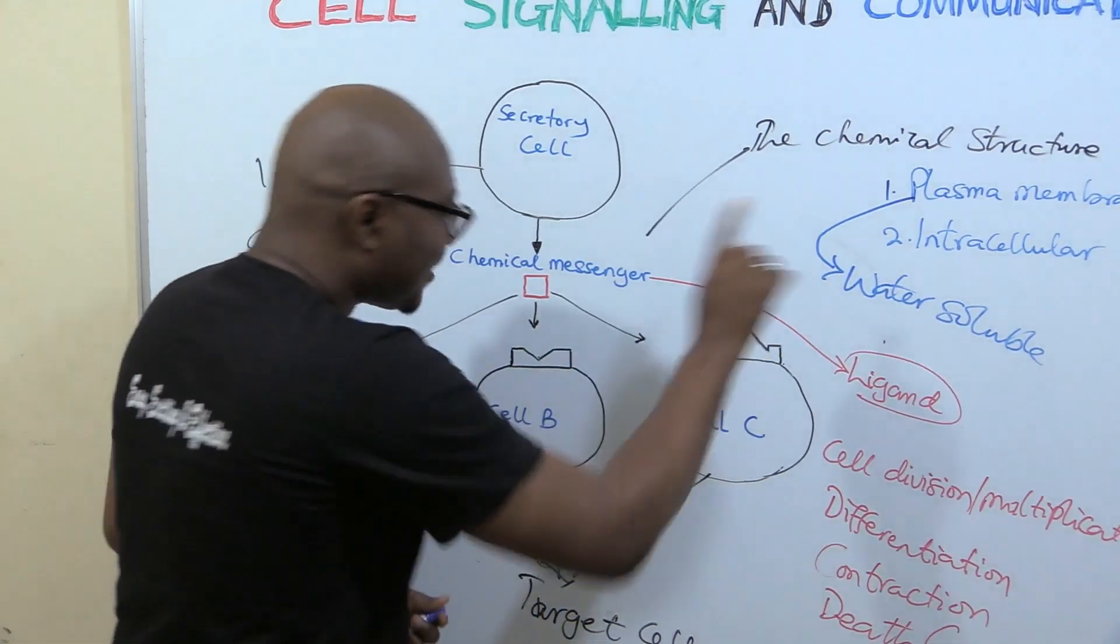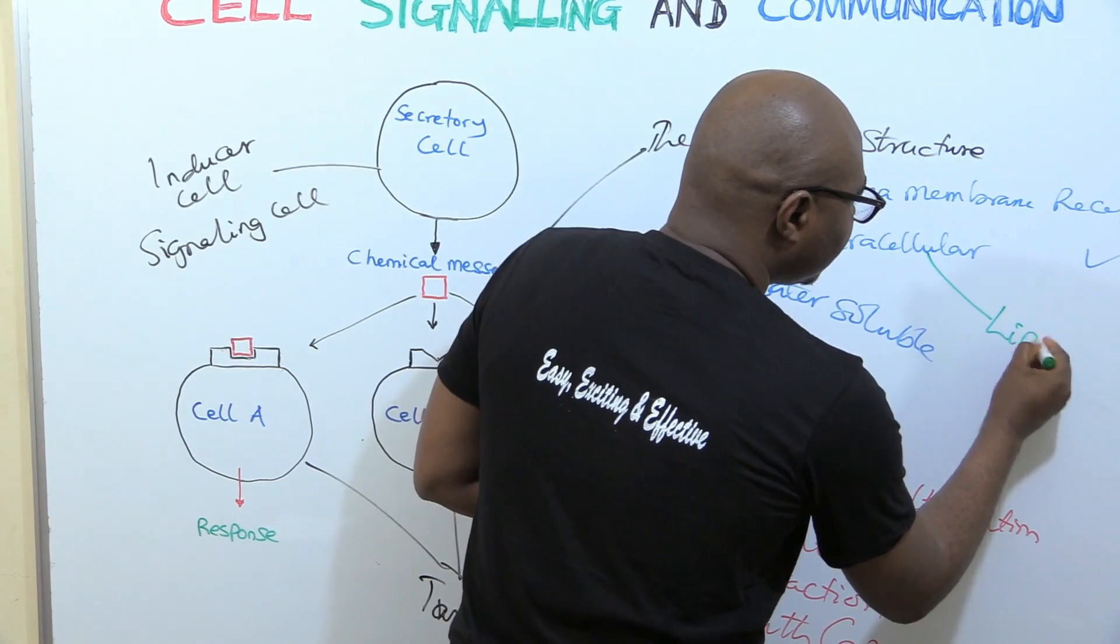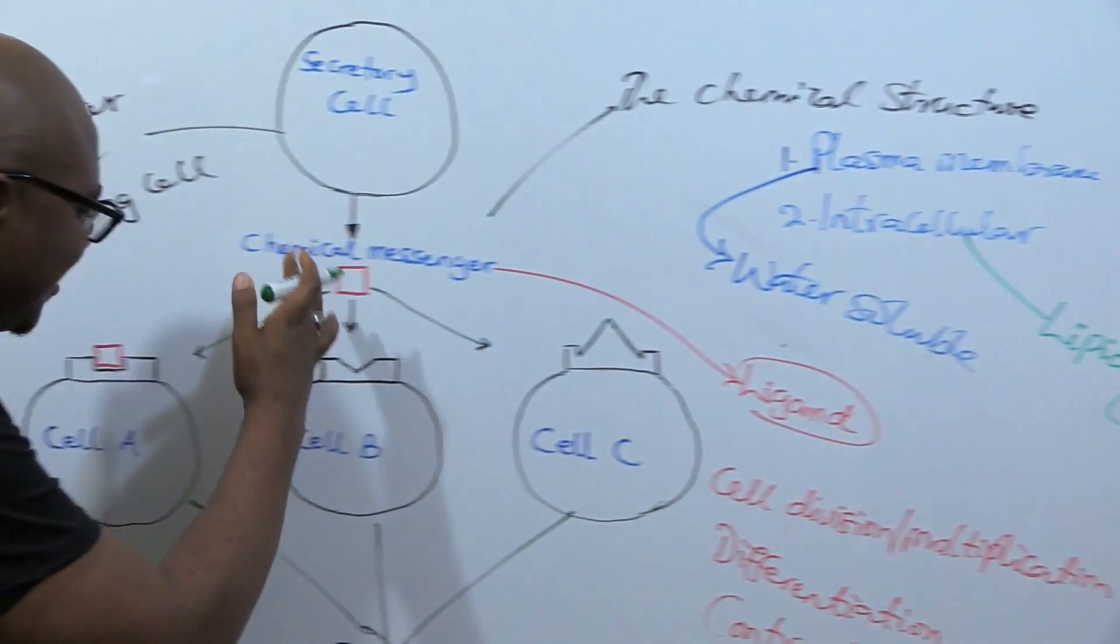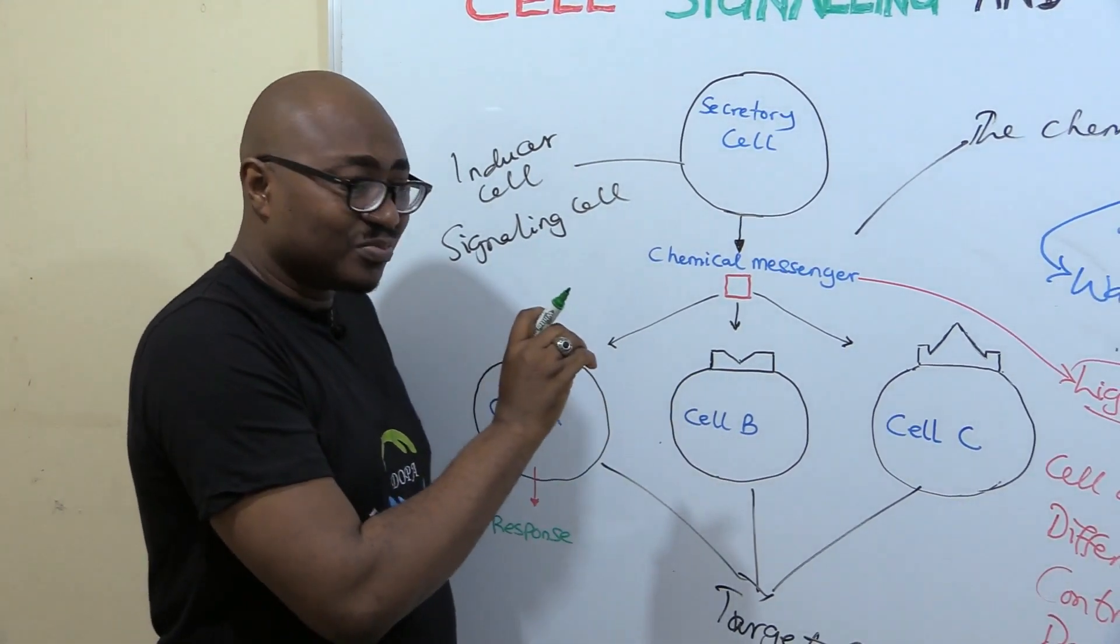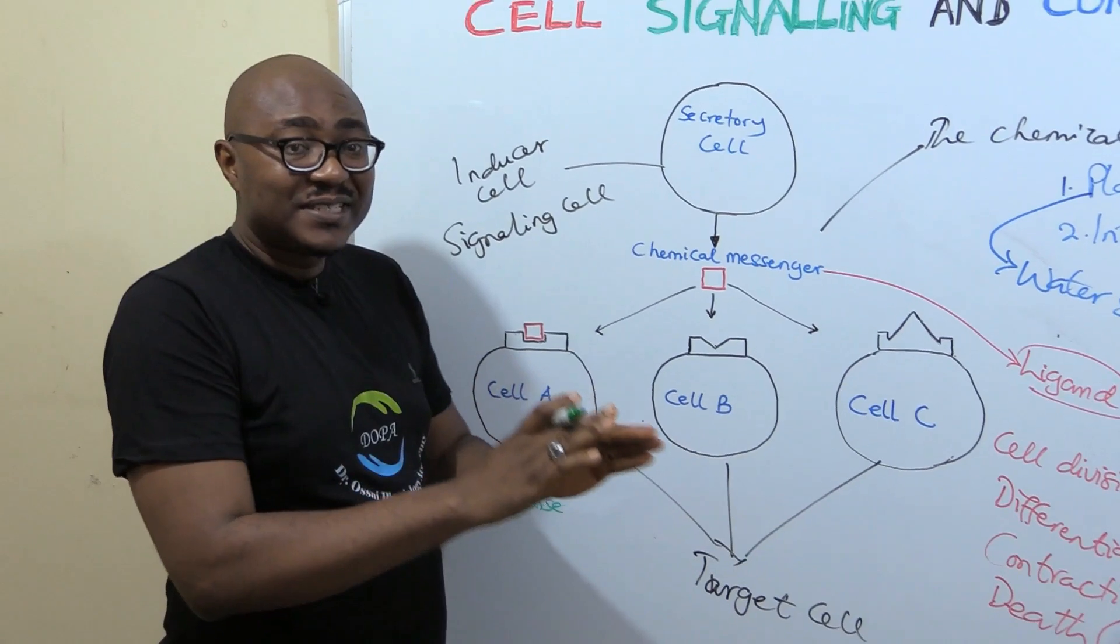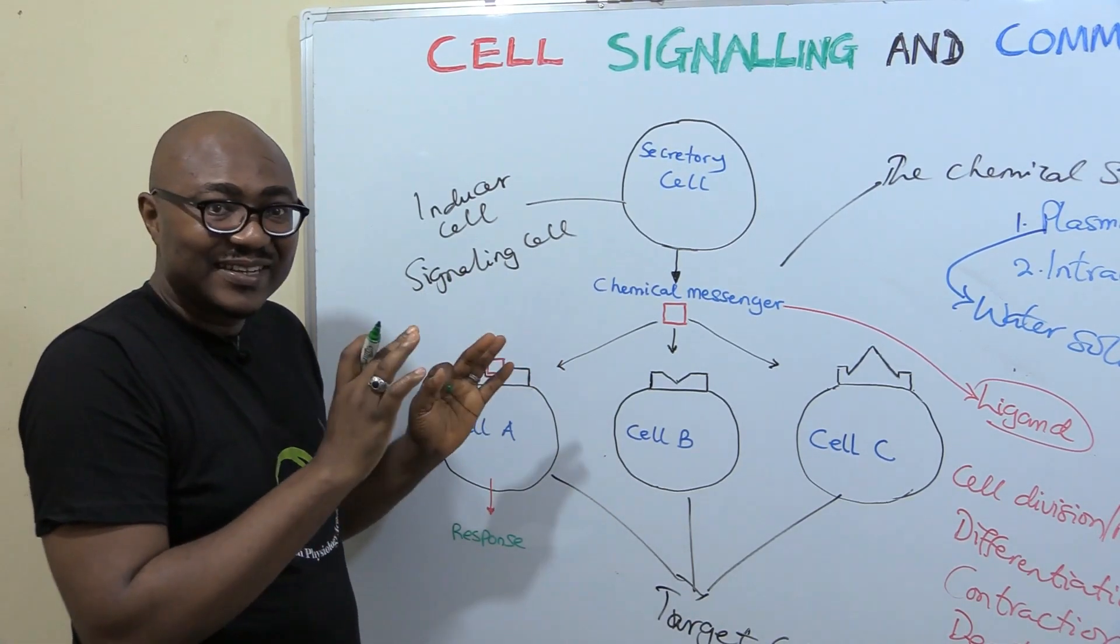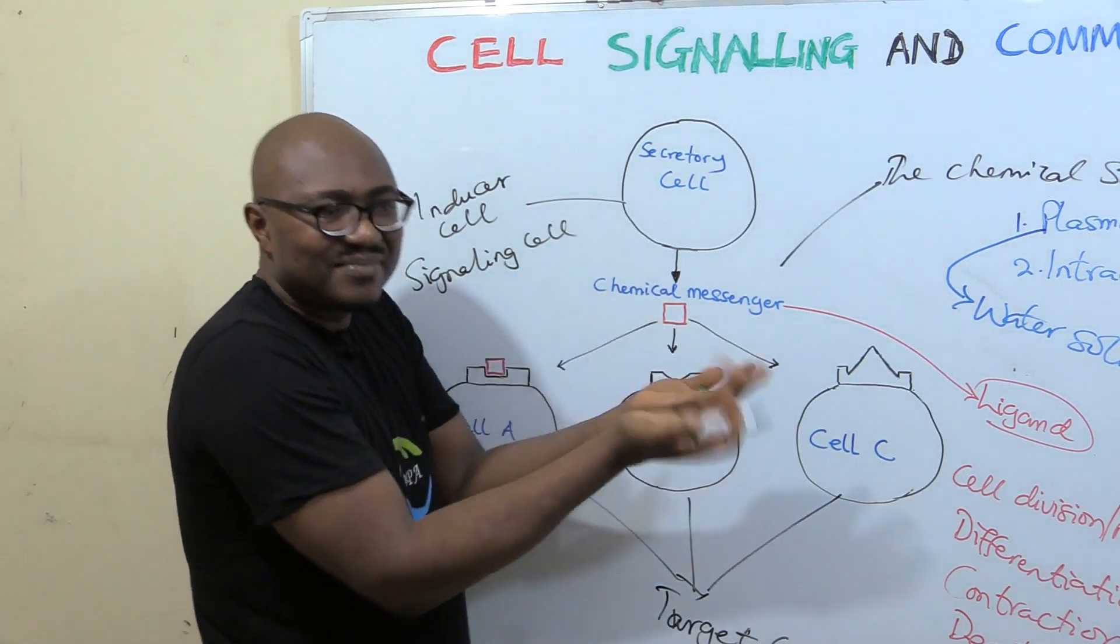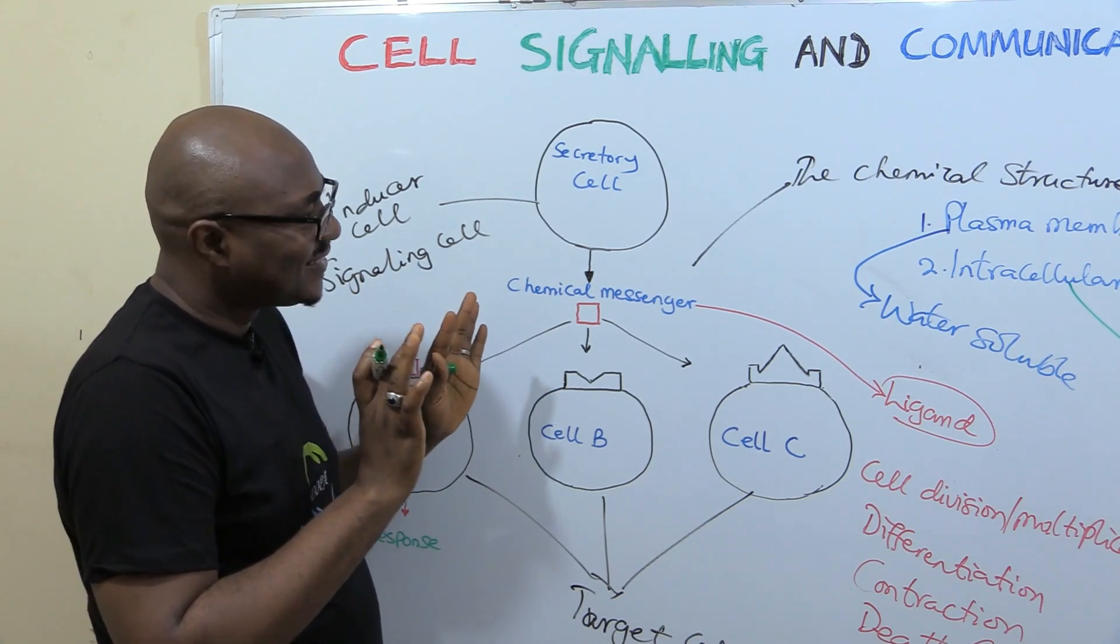So, water-soluble ligands. Then the intracellular ones, they are lipid-soluble, lipid-soluble ligands. They easily penetrate the cell. So, when they penetrate the cell, they go straight to the nucleus. And you remember that the nucleus is the origin of protein synthesis. So, this is why the other one activates proteins that are already in existence there and all of that. This one starts the synthesis of fresh proteins. They still lead to the same outcome. Protein, protein, new proteins, then activating old proteins. So, that's just the difference.